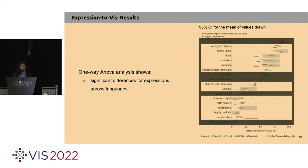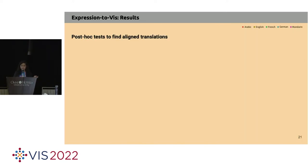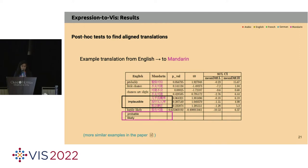We analyzed the values collected and observed significant differences between expressions across languages. For instance, taking the English word 'likely' — except for the Arabic translation, the other expressions were assigned much lower values by participants. For cases where differences existed from the original English expressions, we tried to find translations that would align together — pairs of expressions that would not significantly differ. Through post-hoc tests, we found cases where one English expression matched three different expressions in Mandarin, and cases with no match at all.